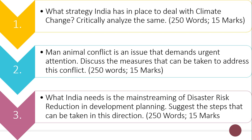The third question is always from the static part. We don't just pick any random static topic — we have framed a detailed timetable in which each day is allocated to a particular topic. The timetable is shared with you in advance and you have to prepare for that topic for that particular day. The static question is asked from that day's target topic. Today's target was disaster management in GS3, which is why the disaster risk reduction question is from the static part.